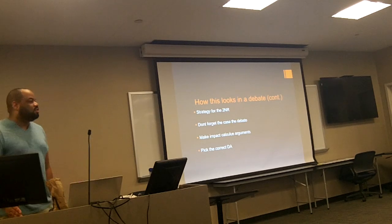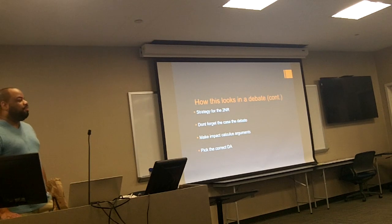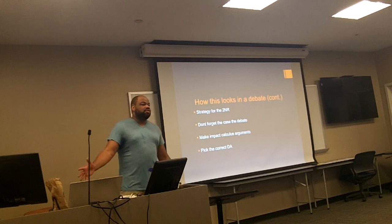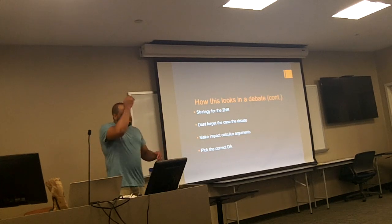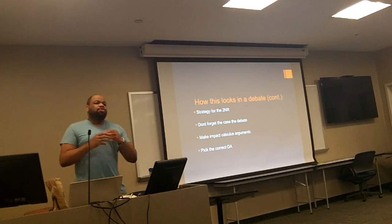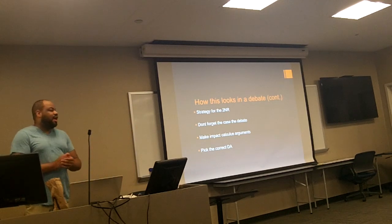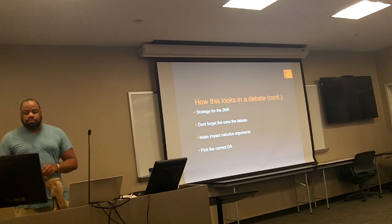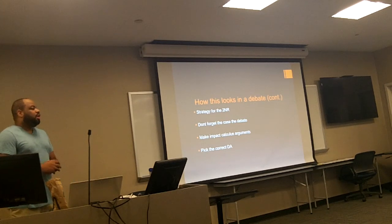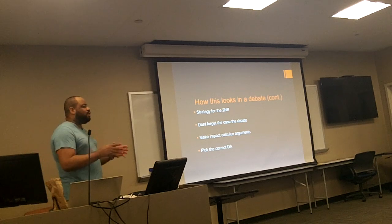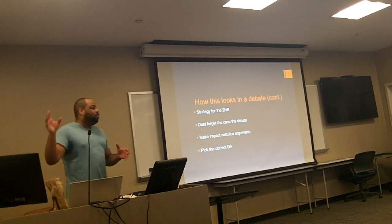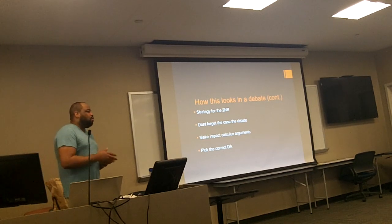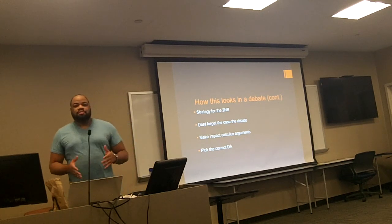This last one is sort of the hardest: pick the correct dis-ad. A lot of people struggle when it comes to picking the correct arguments to go for in the 2NR. The 2NR may be the hardest speech in the debate for this reason. How do you determine what's the best dis-ad? You look at a couple things. One is the quality of arguments made against the dis-ad by the affirmative in the 1AR and 2AC. The second is that you choose the DA that you think is the strongest. Even if the opposing team spends more time on it, if you go for a DA where the impact doesn't make sense, the link doesn't make sense, or the card is old, that is a non-strategic dis-ad to go for.